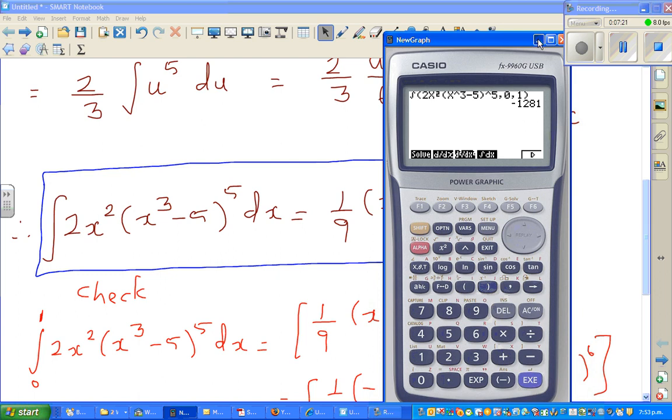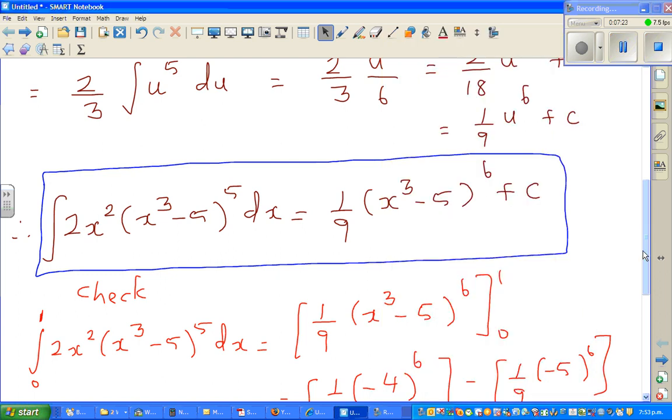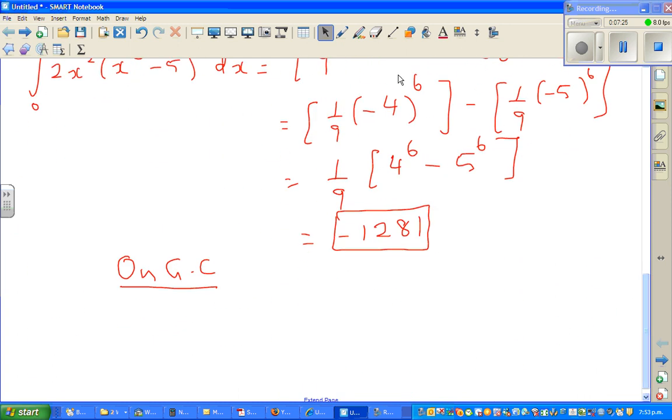There we go. The answer is 1281. So you can be quite confident that your answer is right. On the graphic calculator, we got the same answer minus 1281. So you should be pretty happy that your answer is right.